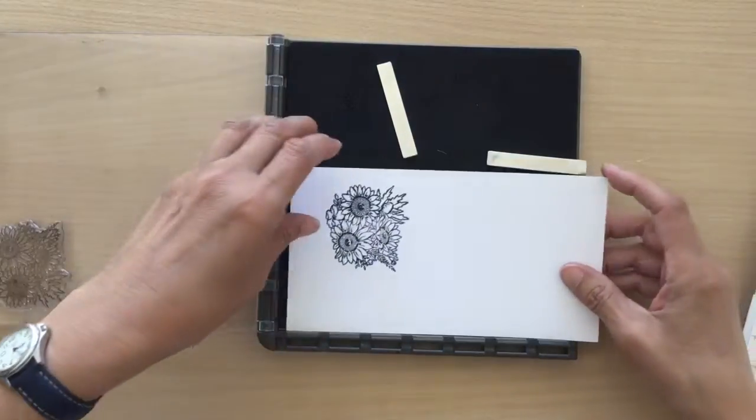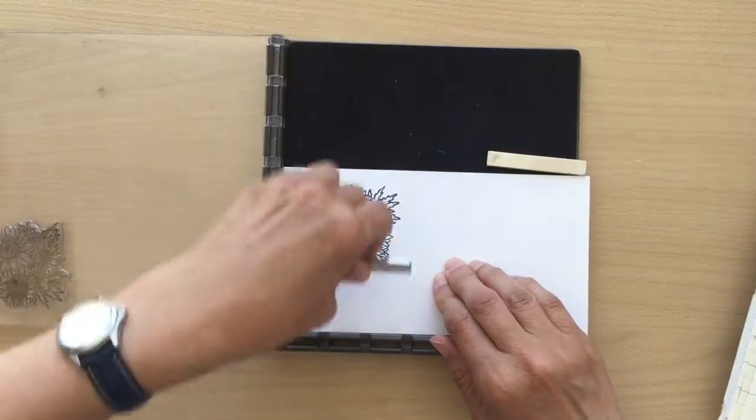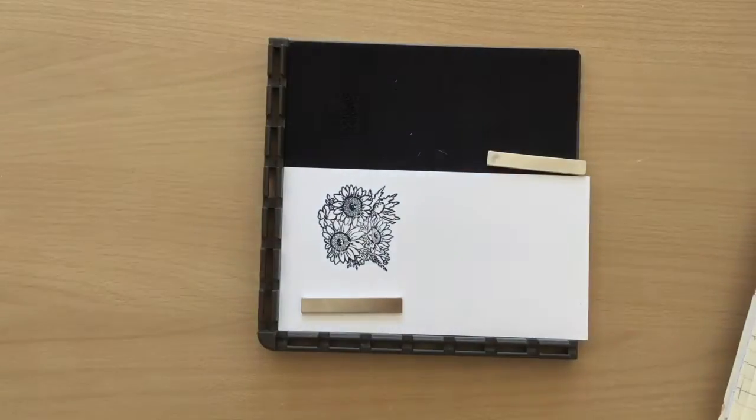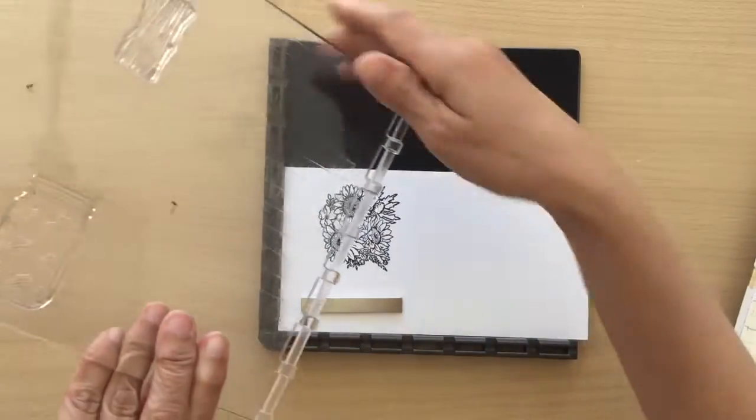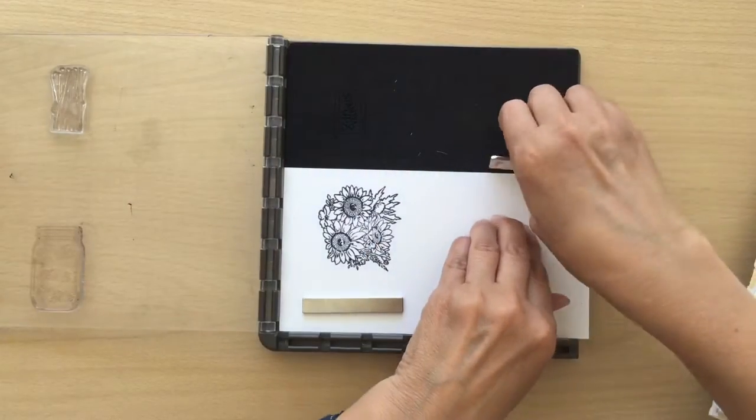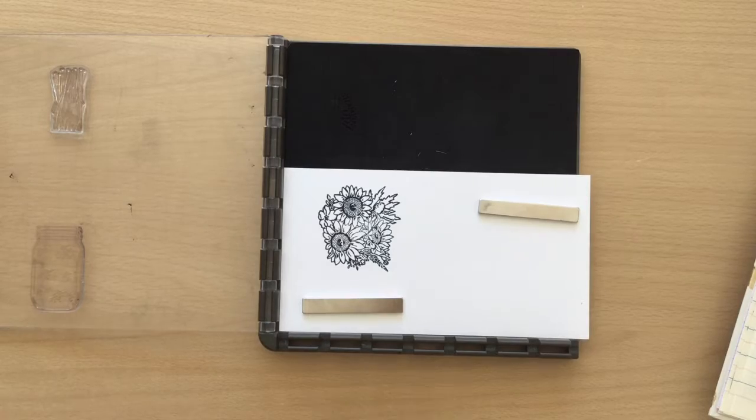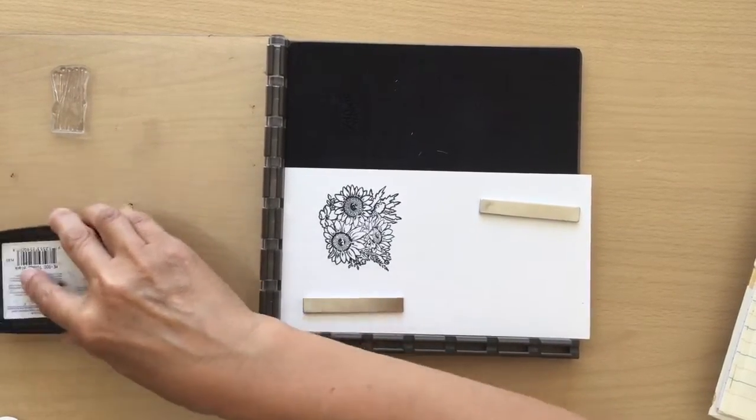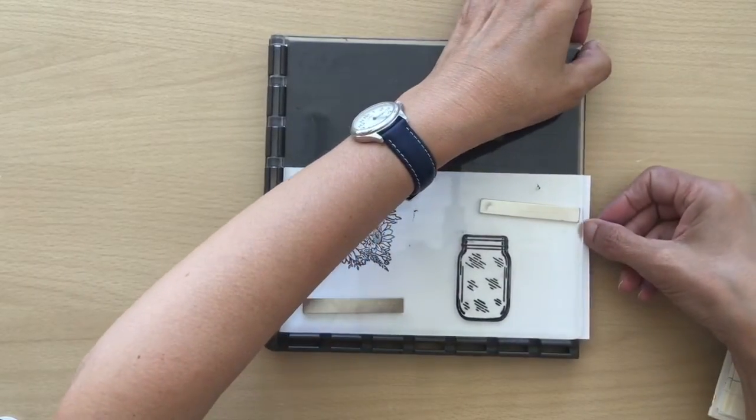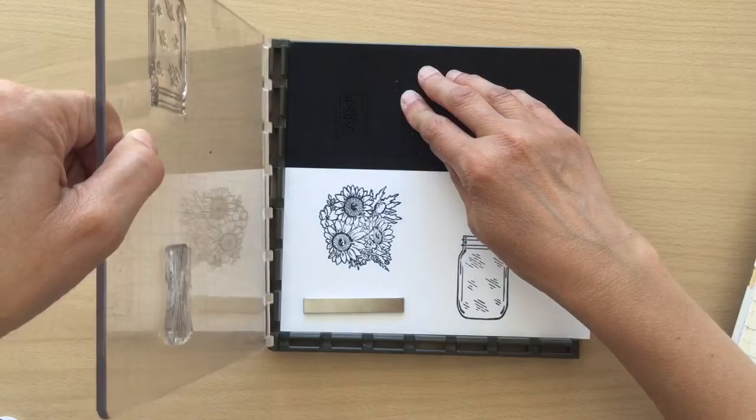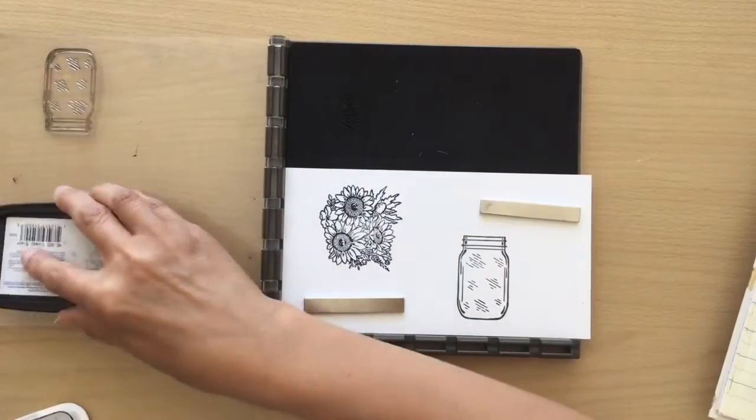I'm just going to turn it around and put a different platform on. I'm going to stamp my jar again using black. I'm just going to flip this round and I've got the stems.